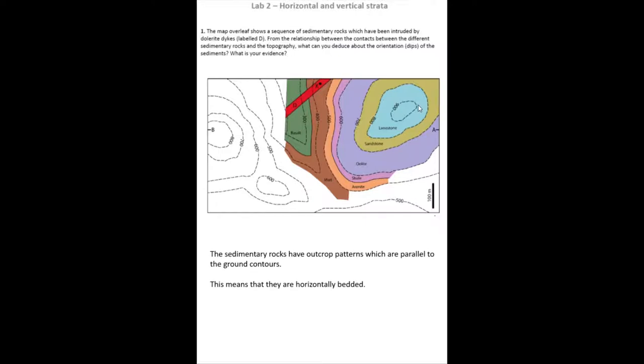you can only get that sort of relationship when the rocks are horizontally bedded. It makes perfect sense if you have a boundary between an oolitic limestone and a sandstone which crops out perfectly horizontally everywhere along the same topographic height, then the bedding or the sedimentary rocks themselves must be horizontally bedded. So our outcrop pattern shows that the sedimentary rocks, the contacts between them are parallel to the ground contours, and this means that they must be horizontally bedded.